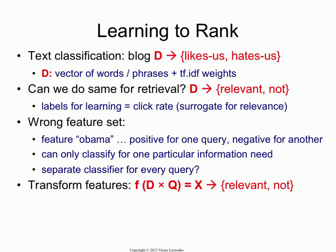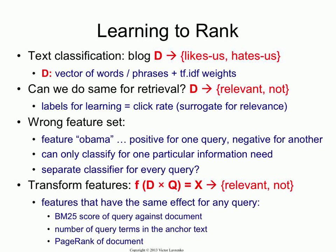The solution is to transform the feature set, to come up with a different feature set X that would be consistent across all sorts of queries. Your previous classifier in text classification had input D and output yes or no. Now, your input is going to be some feature set defined over the cross-product of documents and queries. The output is still going to be yes or no — relevant or non-relevant. But the feature set has to be different; it has to be independent of any query. The features X that you use must be equally good for any query that you issue. So what are those features? Well, we've actually seen a bunch of them. BM25 score, TF-IDF weighted sum — it's a feature, it's a number.